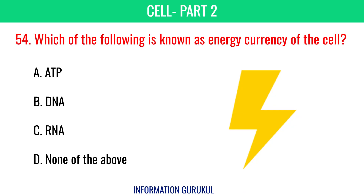Which of the following is known as the energy currency of the cell? Adenosine triphosphate.